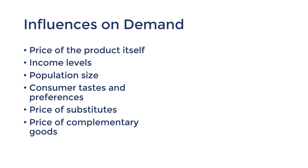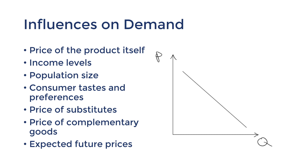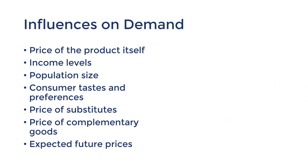The last influence on demand in the syllabus is expected future prices. There's a bakery that I often buy from — their bread is baked fresh every day, so every evening they end up selling leftover bread at a discount. With an expectation that the price will fall later on, my demand for that bread during the day is low — I'm going to put off my demand and buy it later when the price drops. If I expect future prices to fall, I'll lower my current demand. If I expect future prices to rise, my current demand will increase.